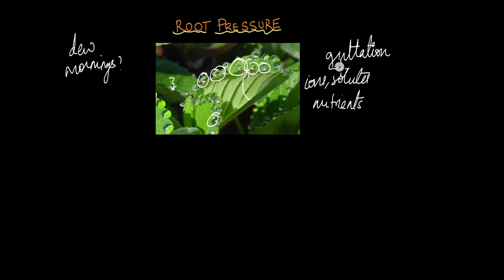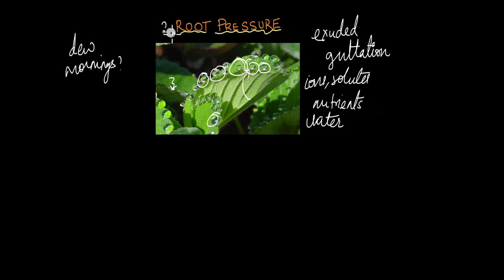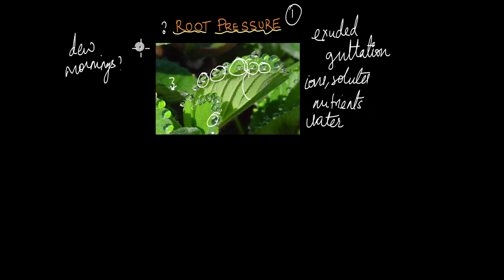What causes these substances — water, ions, nutrients and solutes — to come out of or be exuded out of the plant? The answer is root pressure. Root pressure is the pressure generated within the roots by the accumulation of water, ions and other nutrients. It is one among the three mechanisms by which plants can transport water and nutrients to different parts of the plant.